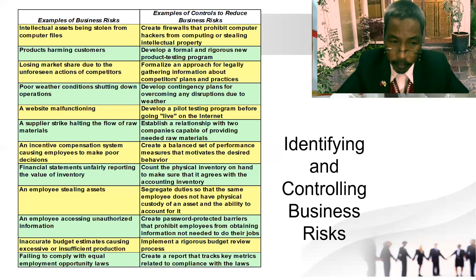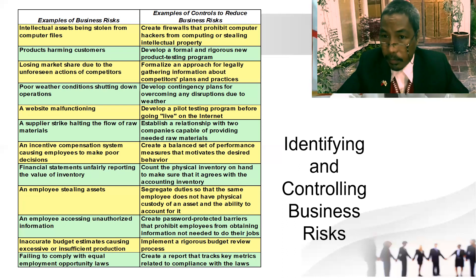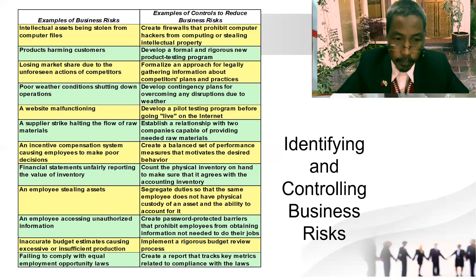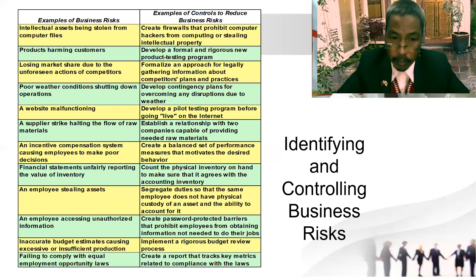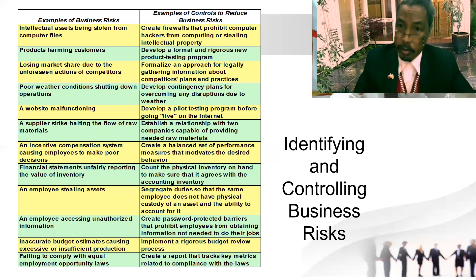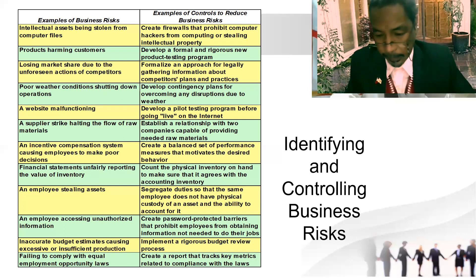Number eleven — inaccurate budget estimates causing seriously insufficient planning. Implement a rigorous budget review process. Number twelve — failing to comply with equal employment opportunity laws. Develop a data report that tracks key metrics related to compliance with the law.